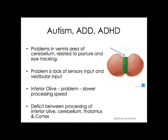Kids with ADD, ADHD, and autism are often poor language processors — they have a hard time with language. The deficit involves processing between the inferior olive, cerebellum, thalamus, and cortex. In general, they have processing issues, and the areas we've discussed are simply underdeveloped.